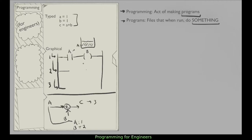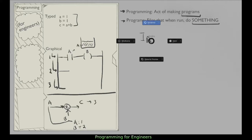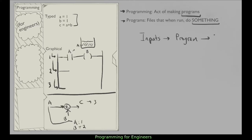In this class we'll primarily be focusing on typed programming. Now, how does a program actually work? In general, a program has inputs that go into it and it outputs something. The program itself is what we're making; the inputs are generated by whoever is using your program.